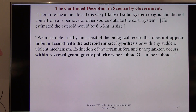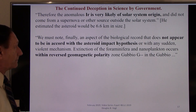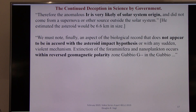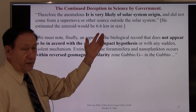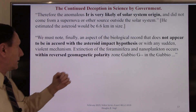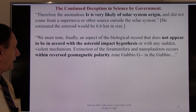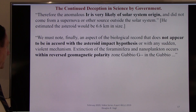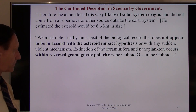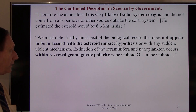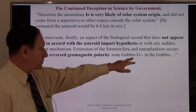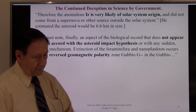Then Alvarez admits: 'The anomalous iridium is very likely of solar system origin and did not come from a supernova or other source outside the solar system.' He's giving clues. He must also note that the biological record does not appear to be in accord with the asteroid impact hypothesis or with any sudden or violent mechanism — and that the extinction of nanoplankton occurs within reversed geomagnetic polarity. That's the key.